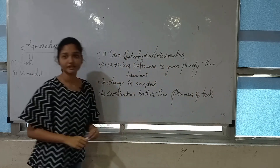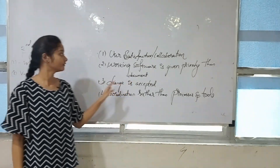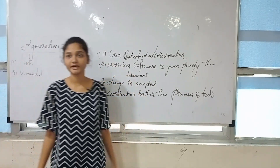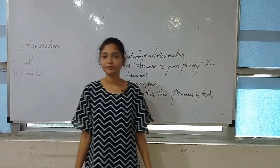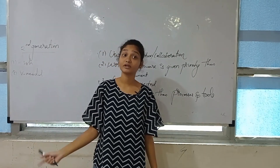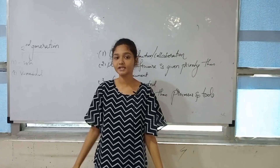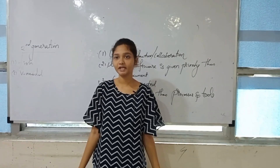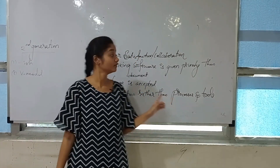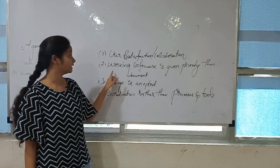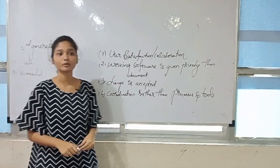Generally the Agile model follows four values. The first is user satisfaction or collaboration — while developing or after developing a program, if a user has any changes or needs in the application, we can accommodate them using the Agile model.